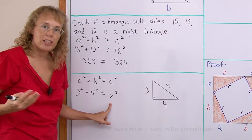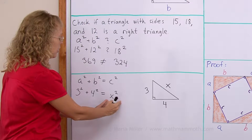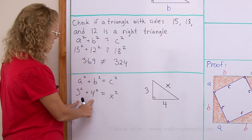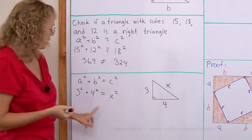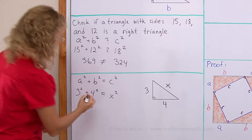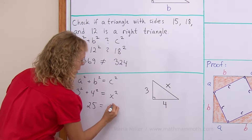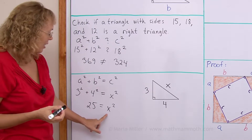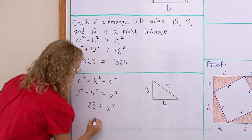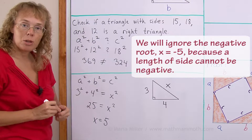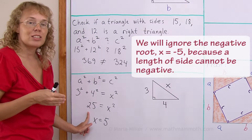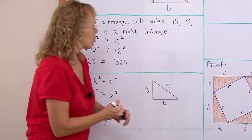X squared is already isolated on one side, which makes it simple. All I do is simplify the right side: 3 squared is 9, 4 squared is 16, and 9 plus 16 is 25. So I get x squared equals 25. What number squared equals 25? X equals 5. If this were a more difficult number such as 26, we would need to take the square root using a calculator. So x equals 5.